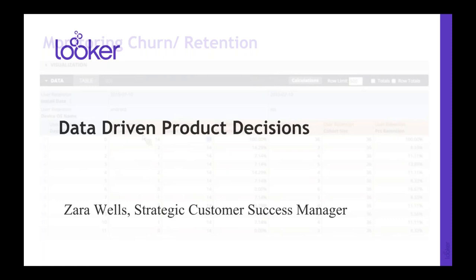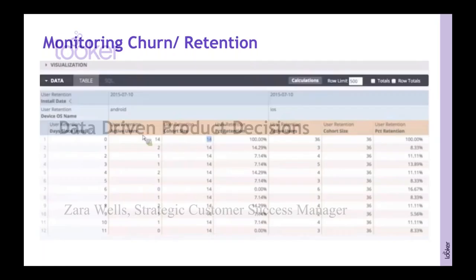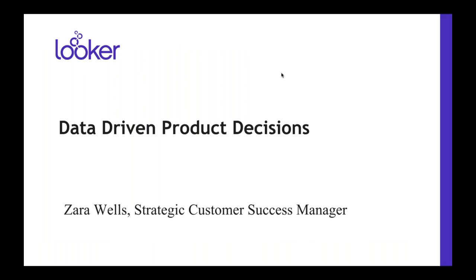Zara encourages the audience to pop their most important KPIs into the chat box — things like feature adoption and monetization. She then transitions to an example at a very high level, experiencing a brief technical difficulty with her screen share, with the slides freezing between transitions. Hannah and Zara work through the issue, noting the slides will be shared afterwards.